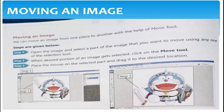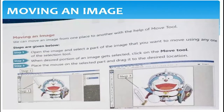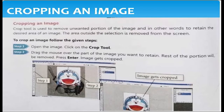Our next topic is how to move an image. We can move the image from one place to another with the help of the move tool. Open the image and select the part of an image that you want to move using any one of the selection tools. When the desired portion of an image is selected, click the move tool, place the mouse on the selected part, and drag it to the desired location.